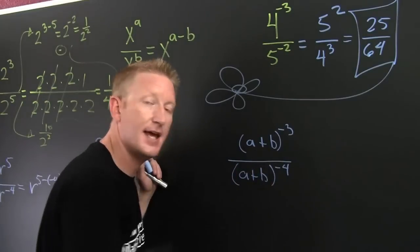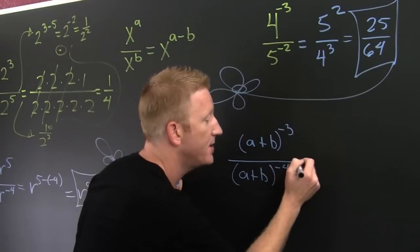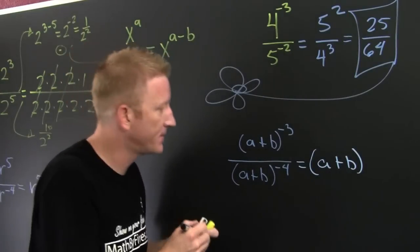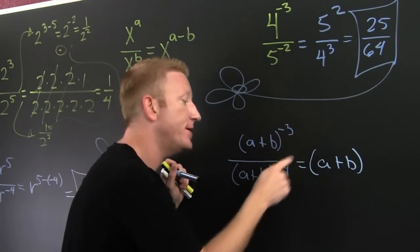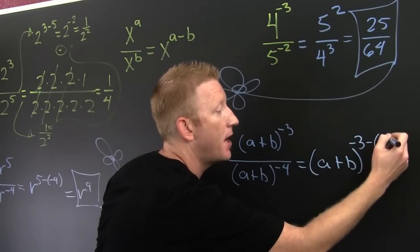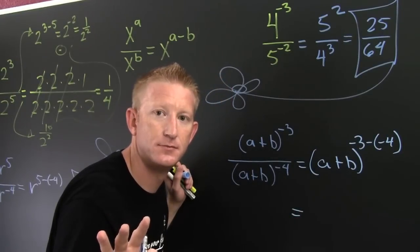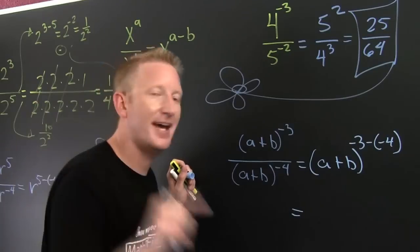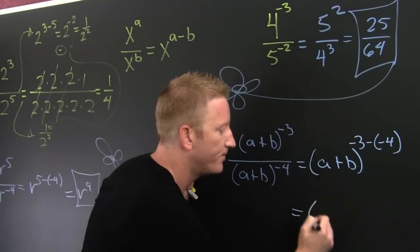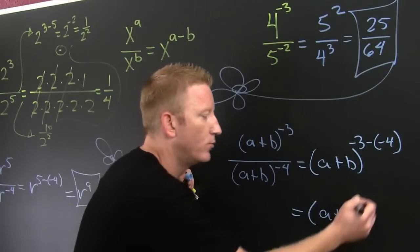Because these bases are the same, I can use this quotient property for exponents here. So I can write that base — A plus B — and then that's the minus 3 minus a minus 4. So then that's minus 3 minus a minus 4, which gives minus 3 plus 4, which is 1.